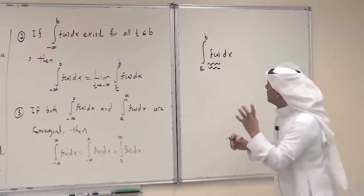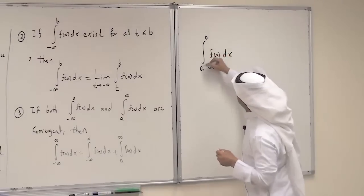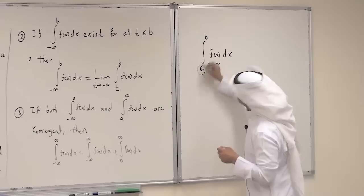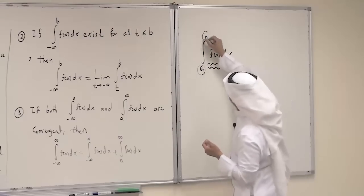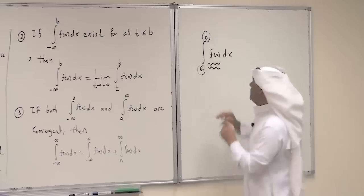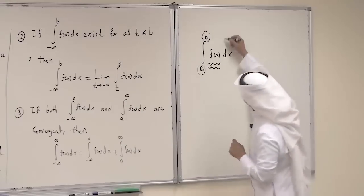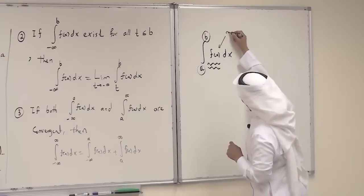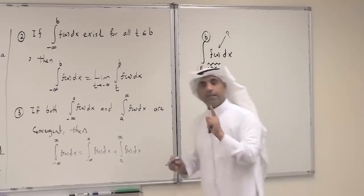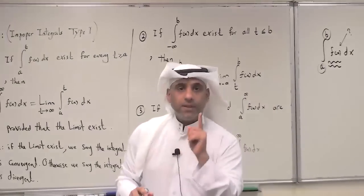The question is now the following: what happens if this interval is not finite, meaning maybe a is minus infinity, or b is infinity, or both minus infinity and infinity? The second question: what happens if this function has an infinite discontinuity? In this case, the definite integral will be called an improper integral.